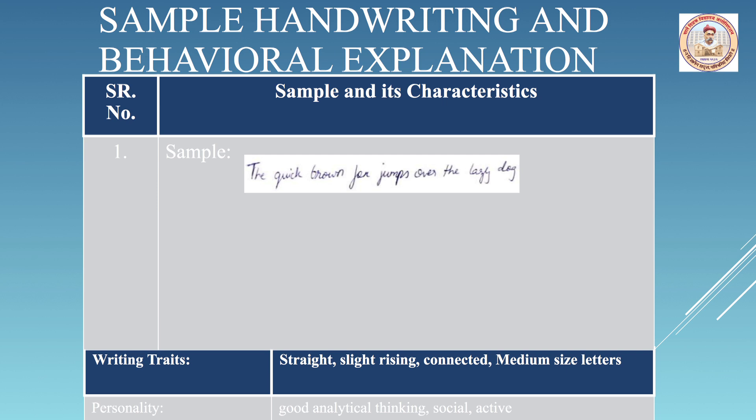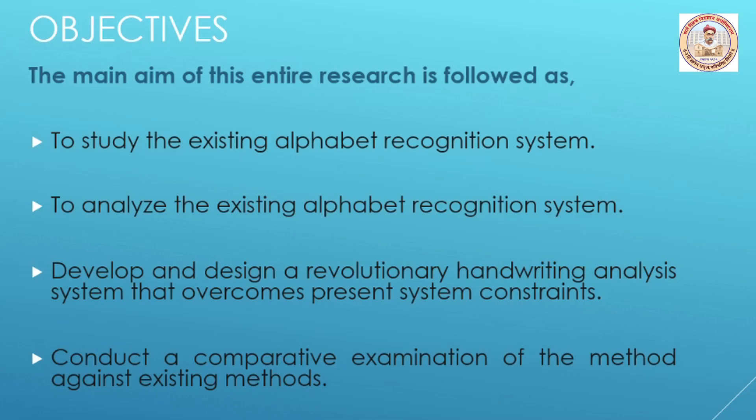Finally, the output is the person's nature — what that person is going through or their strengths. The main objectives were to study and analyze existing alphabet recognition systems, to develop and design an evolutionary handwriting analysis system that overcomes present system constraints, and to conduct a comparative examination of methods against existing methods.